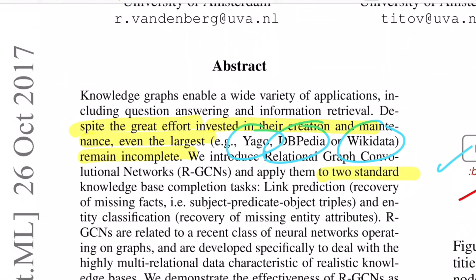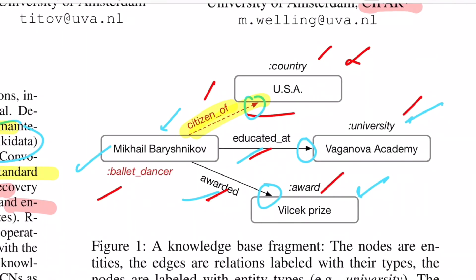And two such standard knowledge base completion tasks are link prediction, where you try to find the relation that might not exist between any two current nodes, and then entity classification, which is about giving identity to any particular node. So for example, if you see this figure again, the red color markings that you see over here are supposed to be predicted by us which were missing in the original graph.